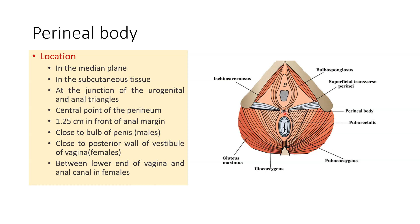In males, the perineal body is close to the bulb of the penis. In females, it is close to the posterior wall of the vestibule of the vagina. In this picture of the female perineum, it lies between the lower end of the vagina and the anal canal. You can see the urogenital triangle with the urethral and vaginal orifices, and the anal triangle with the anal orifice.